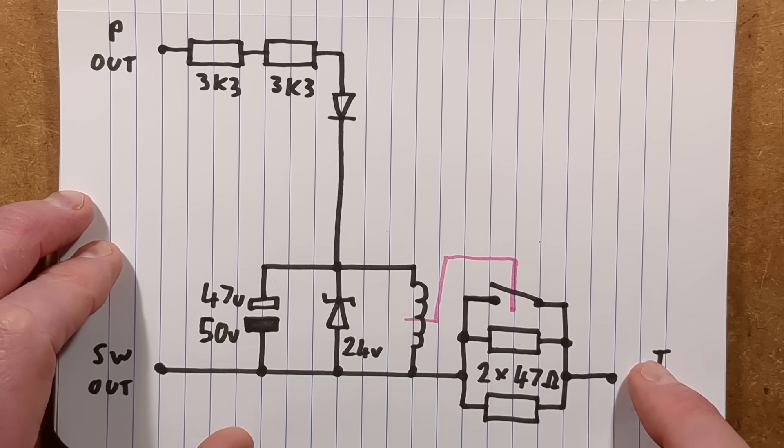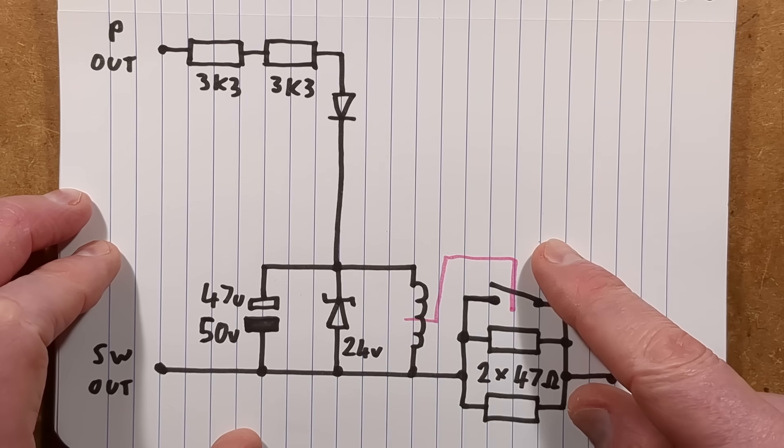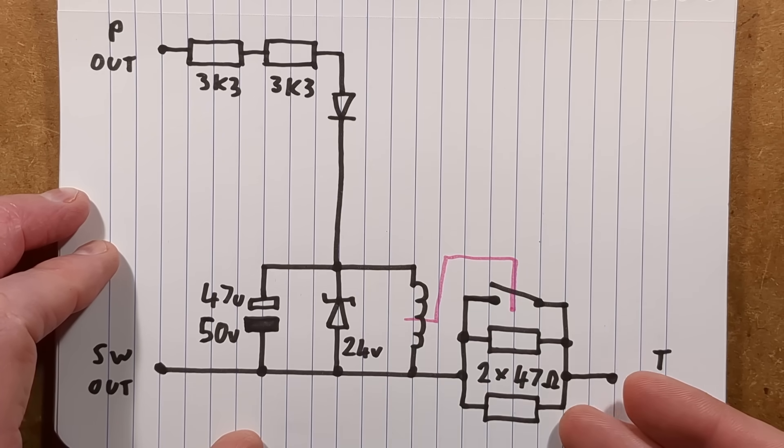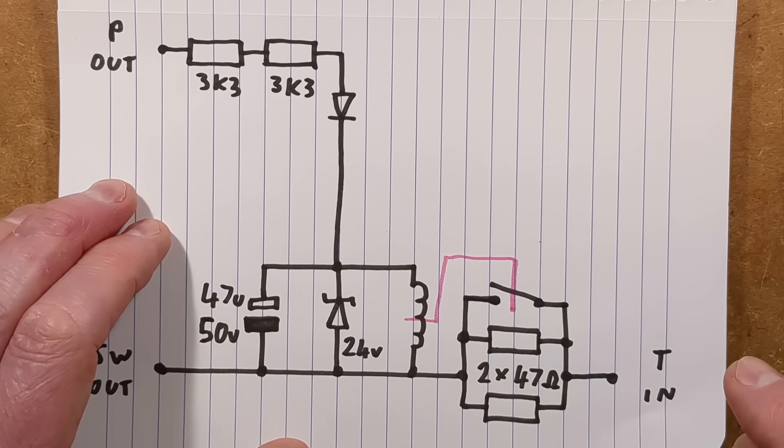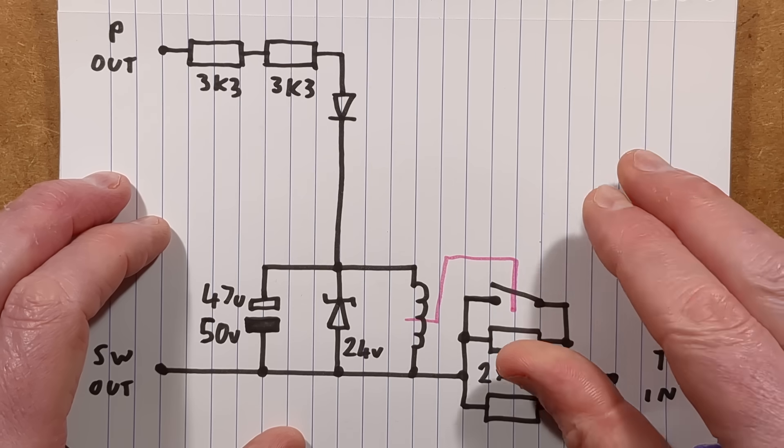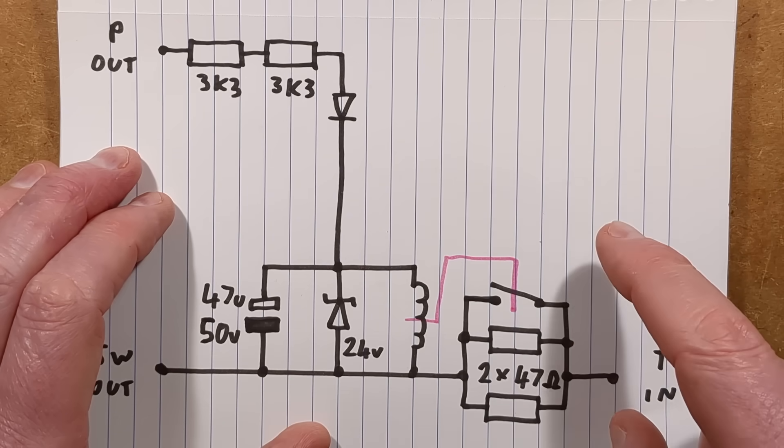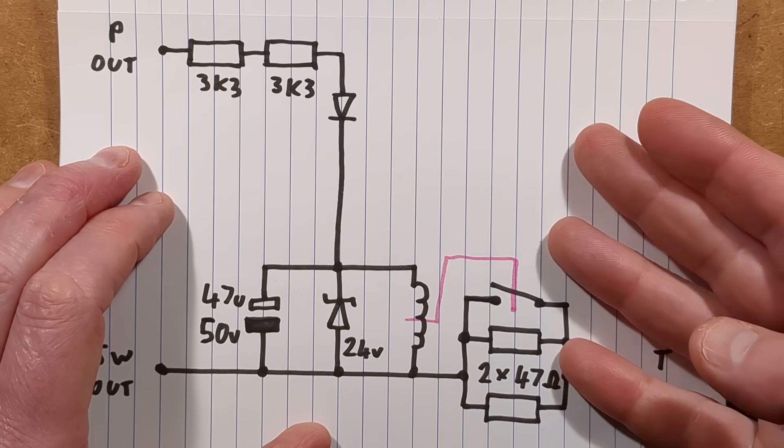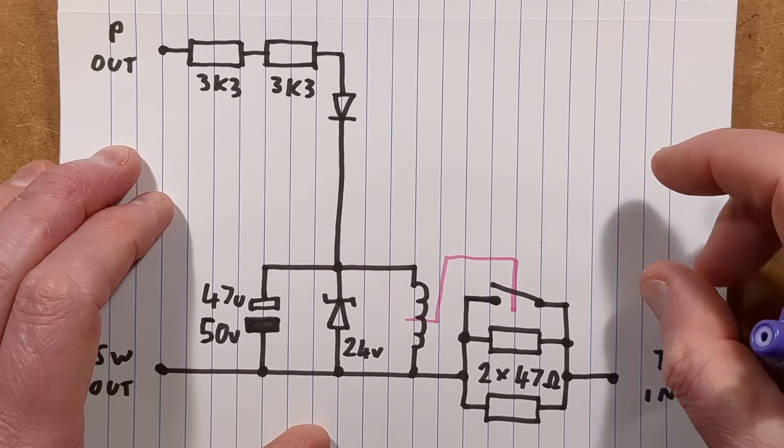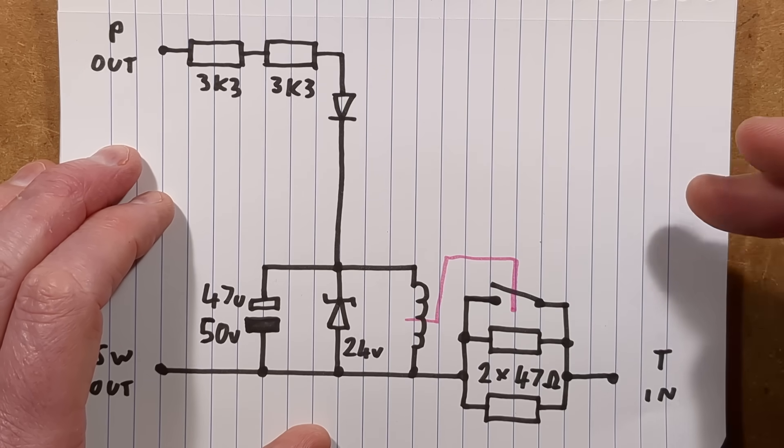So what happens is that initially when you power up, the live goes out to the transformer via these two resistors because this relay contact is initially open. Those two resistors are rated 5 watts each and 47 ohms each, but they're in parallel so the total resistance is about 23.5 ohms. That means that on a typical UK supply it's going to limit the initial inrush current to about 10 amps.